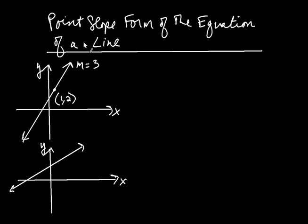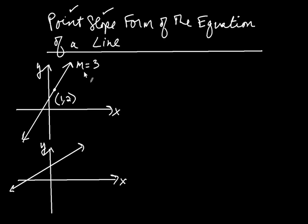Let's talk about what's called the point-slope form of the equation of a line. To use the point-slope form, you're going to need a point and you're going to need the slope of the line. So let's take an example here. I'm given a point on my line — here's the point: one, two. And I'm also given the slope of the line, which is three.